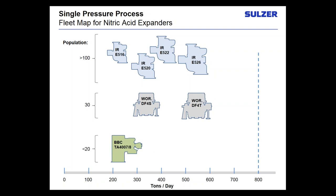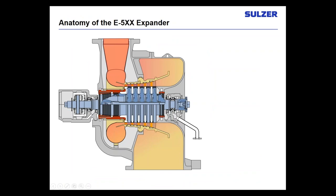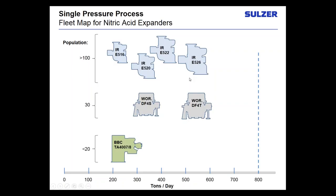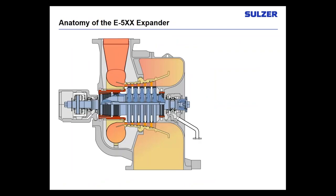There are other expanders that exist in nitric acid plants. The Worthington family is another one — it's not as popular, but we do see these in our shop as well. And the BBC expander is one we don't see as often but still have experience with. You can see the breakdown of tons per day and flow rate going through these machines. We're focusing on the IR expander today because it is the most popular and the one we've done the most upgrades on.